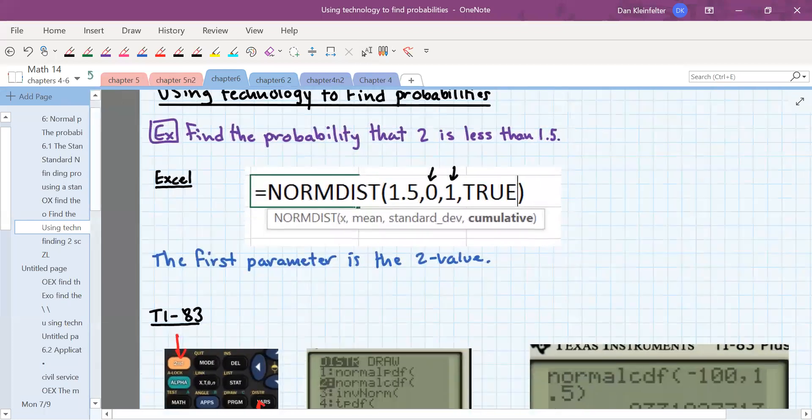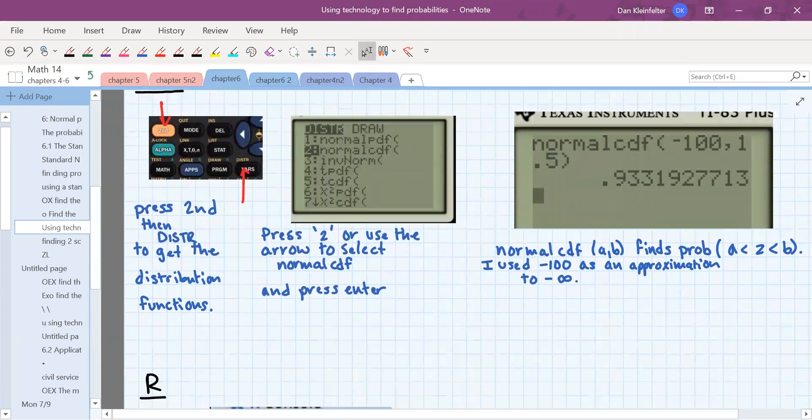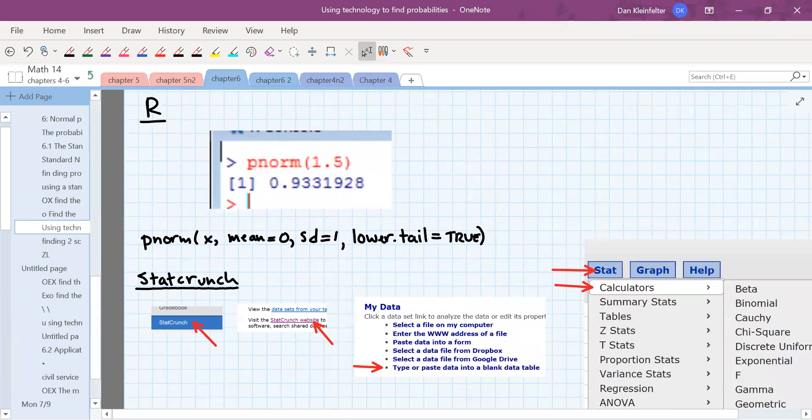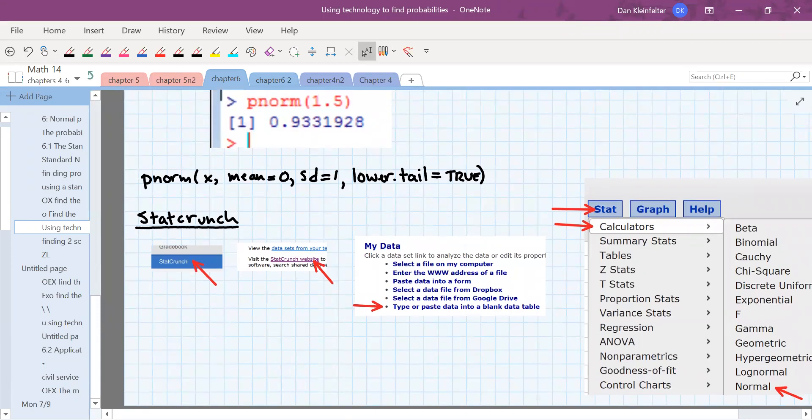If you have a TI-83 calculator, the function you're going to want is normalcdf, and that is accessible through the distribution menu, as shown here in the picture. And then if anybody happens to be using R, the function is called pnorm, and that's for probability, and then norm is for normal distribution.